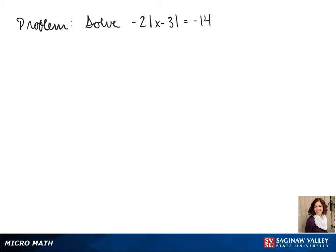Welcome to another day of algebra. Today we'll be solving -2 times the absolute value of x minus 3 equals -14.